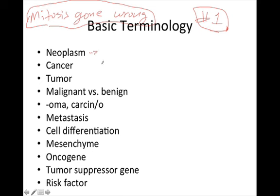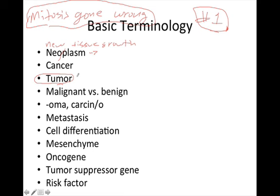The first term you have to understand is neoplasm. 'Neo' means new, and 'plasm' means tissue growth — so a neoplasm is literally a new tissue growth, which is what a tumor is. A tumor is a mass of tissue that has developed or originated in another organ. These can occur potentially anywhere in the body: the brain, liver, lungs, stomach, intestines, connective tissue, lymph nodes.